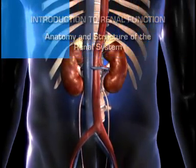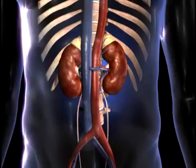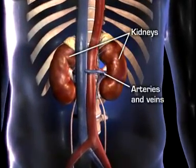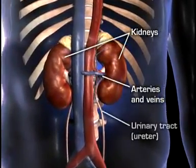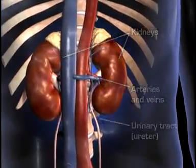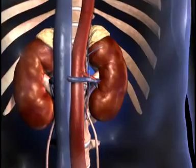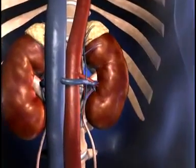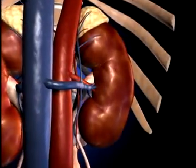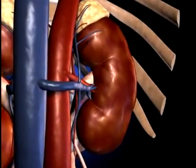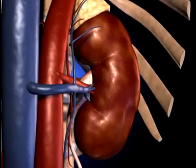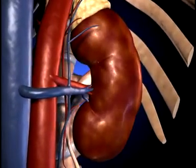The renal system consists of the kidneys, the connecting arteries and veins, and the urinary tract. The kidneys are paired, bean-shaped organs lying outside the peritoneal cavity in the back of the upper abdomen, one on each side of the vertebral column.